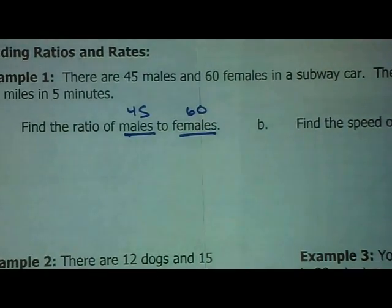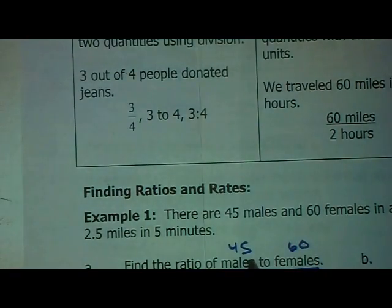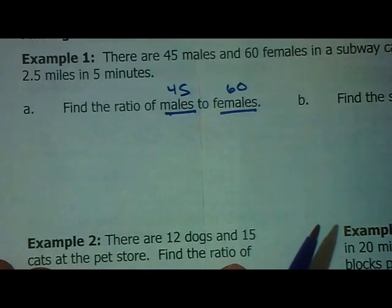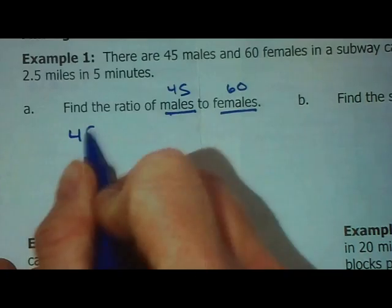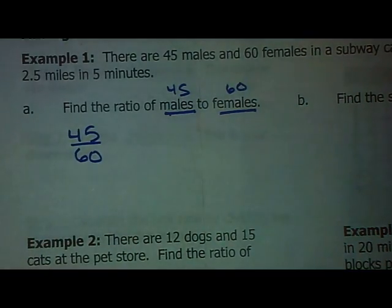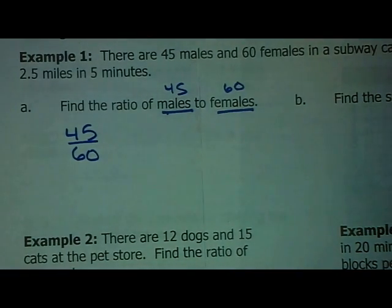All we have to do to write that as a ratio is choose one of those three forms and write it as a comparison 45 and 60. So, I'm going to choose the fraction one because I know that's what you'll pick because everyone loves fractions. So, 45 over 60. Now, just like fractions have to be simplified, ratios also have to be simplified.